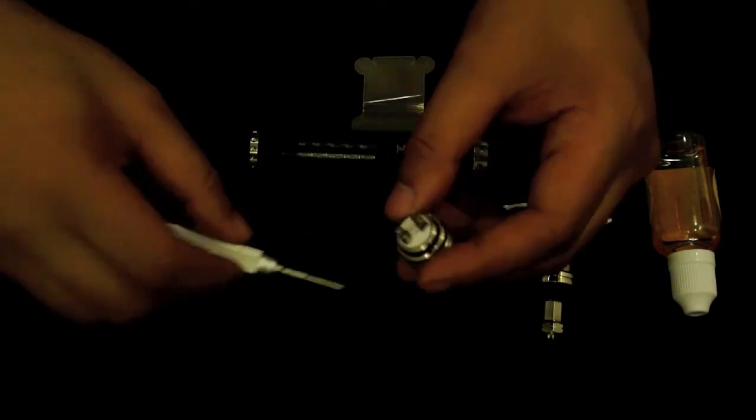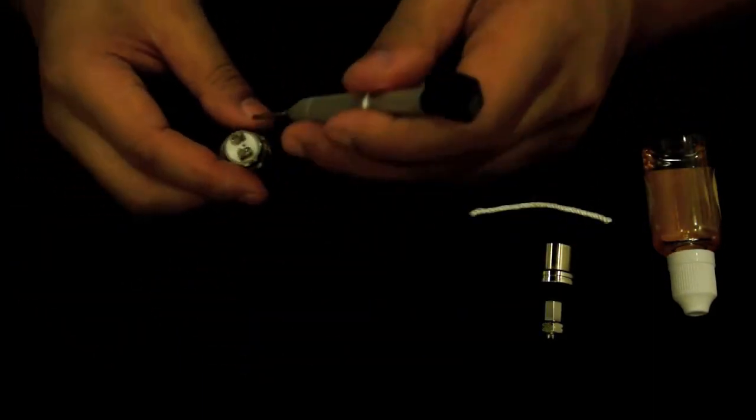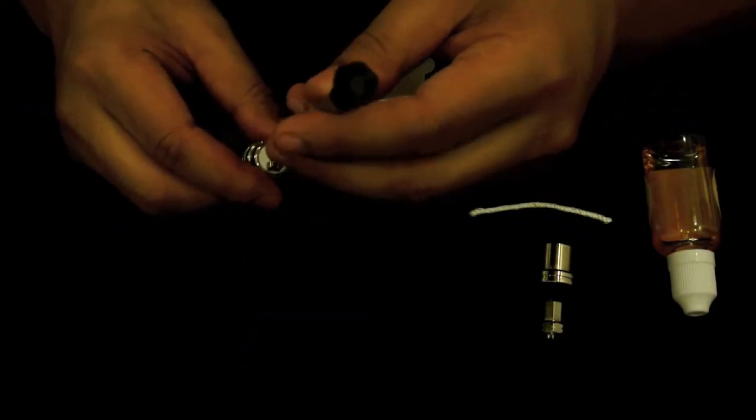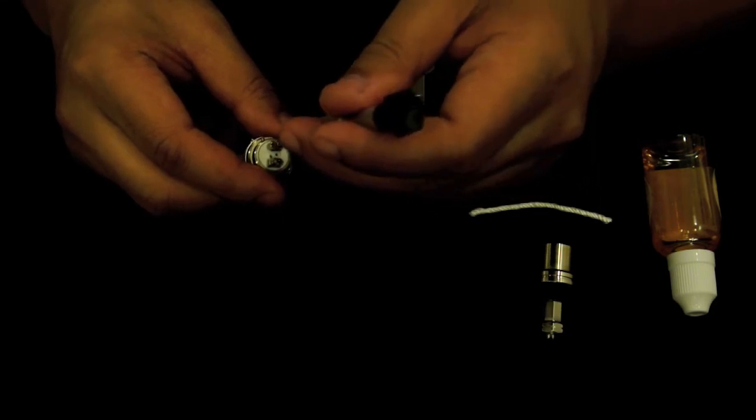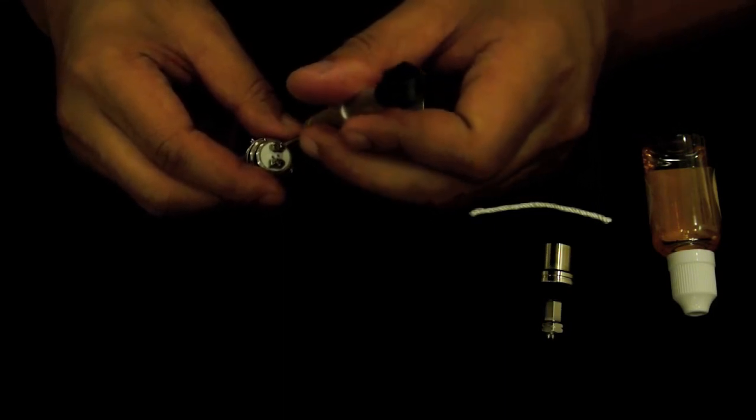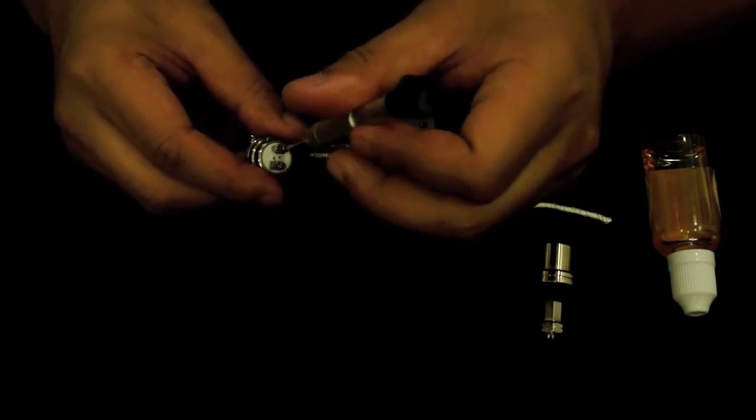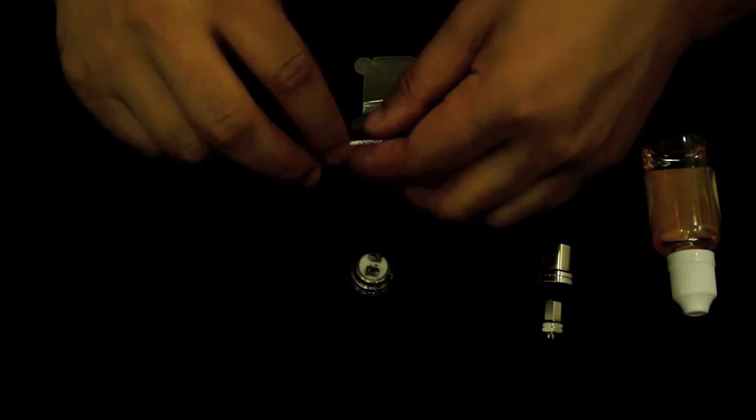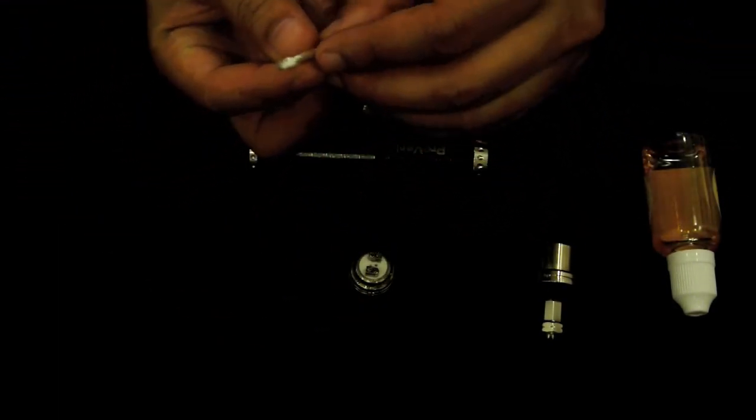I'm going to use the option of using my one tool here to put the build in. So I'll loosen that so I can put my build in, go straight into it. There you go. All right, so you guys can see I've already pre-cut my wick.